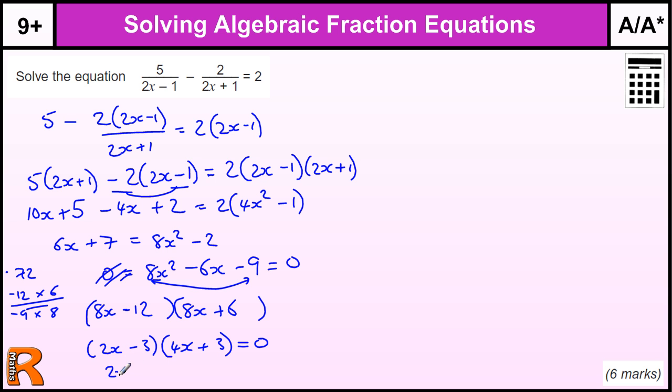So we've got 2x minus 3 equals 0, and 4x plus 3 equals 0. So that gives us, this one gives us x equals, add 3 divided by 2 is 1.5. And then this one, we take away 3 divided by 4, we get x equals minus 3 quarters, or 0.75.